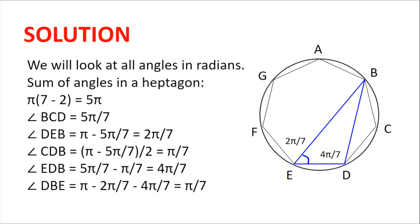We are finally left with angle DBE = π - 2π/7 - 4π/7 = π/7.